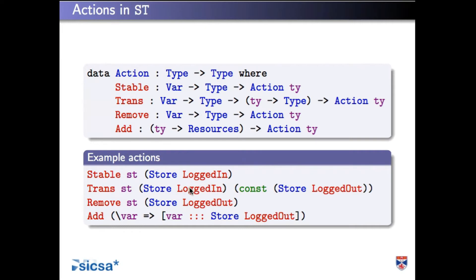Maybe this makes more sense with examples. If we're reading the secret from the data store, the action is that the store called 'st' is stable in the logged-in state — it starts and ends logged in; that's when we're allowed to read the secret. If we're logging out, the store starts in the logged-in state and ends in the logged-out state. The 'const' here just says: discard the result of the operation, it always ends in the logged-out state. Disconnecting means we are removing a store that happens to be in the logged-out state.